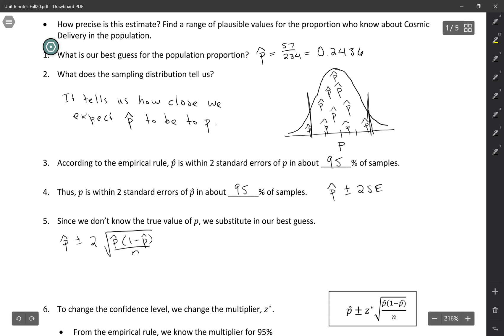So plugging in the numbers, the sample proportion was 0.2436 plus or minus two square root of 0.2436 times 1 minus 0.2436, and then dividing by the sample size, which was 234.